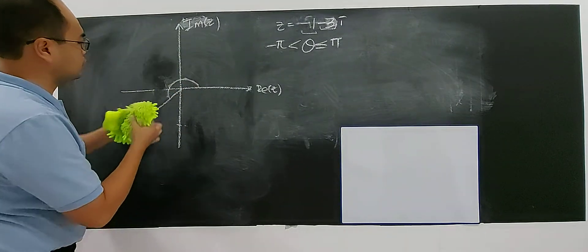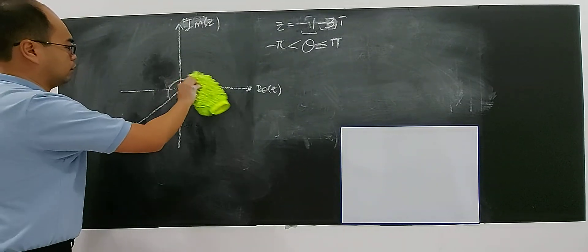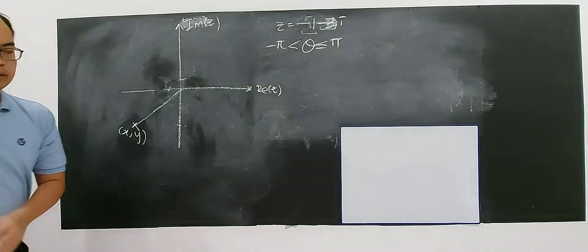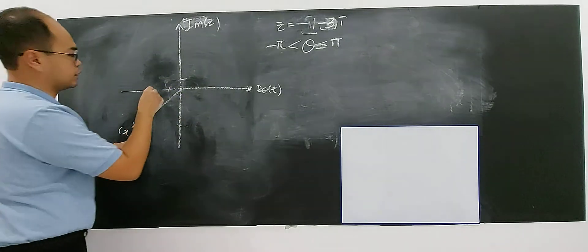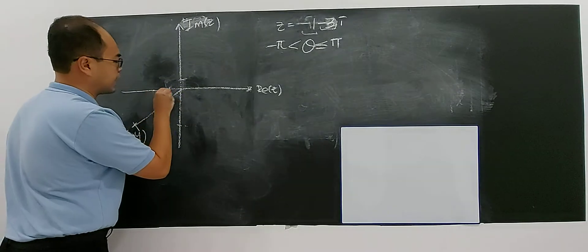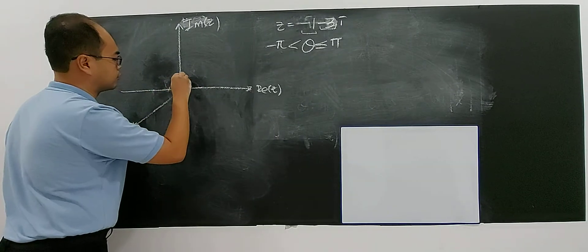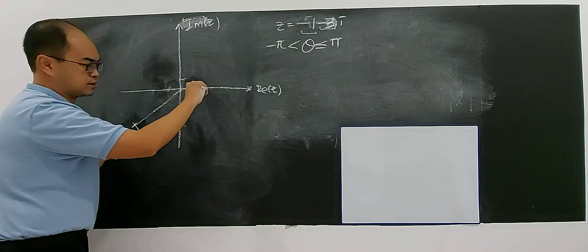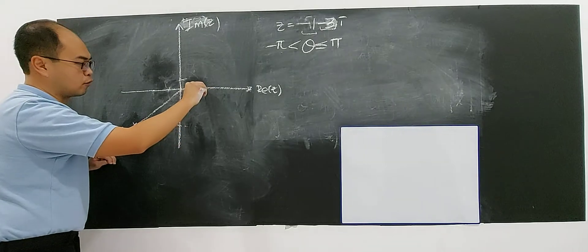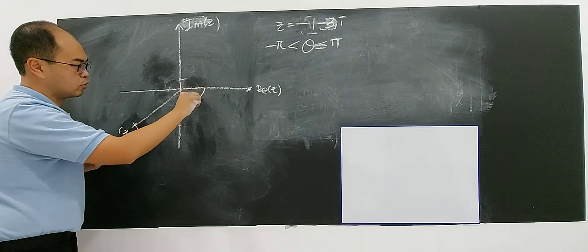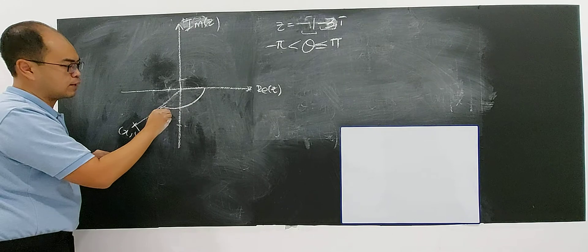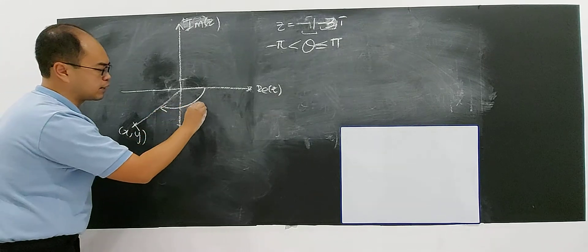It will be in the negative angle. Why? Because it follows clockwise — it has to follow clockwise. So, from here to here, clockwise. So, this will be your argument.